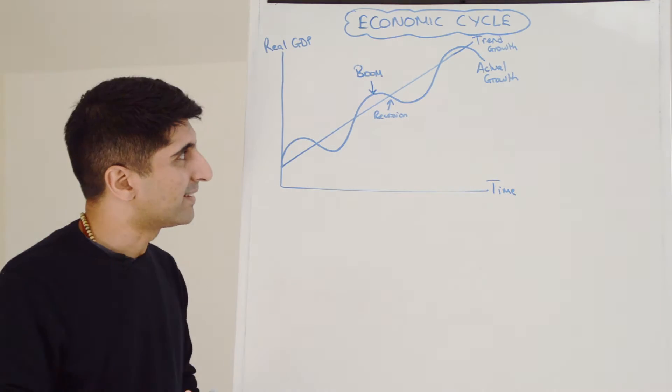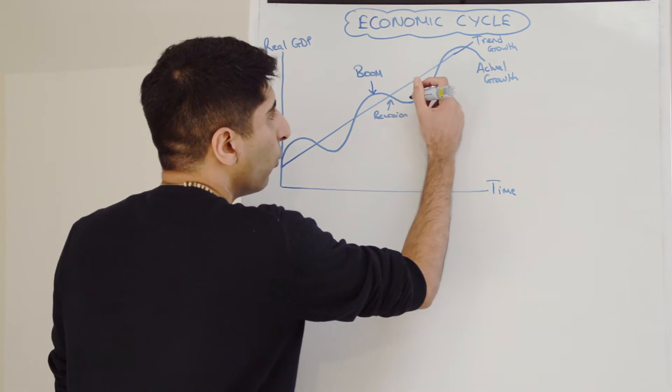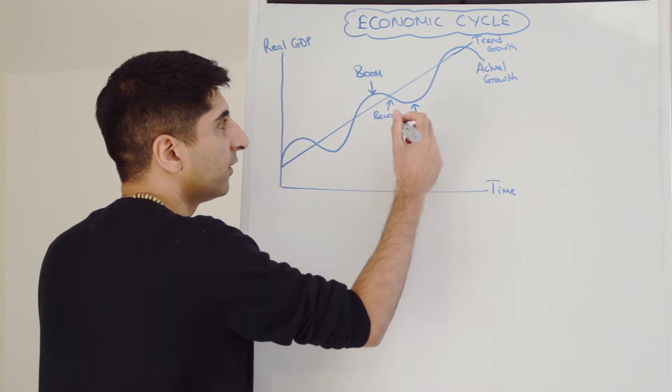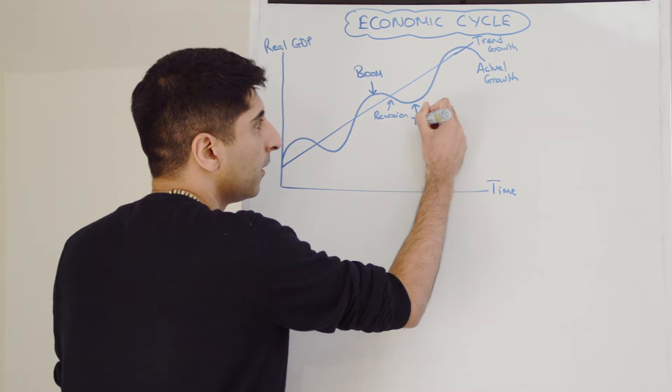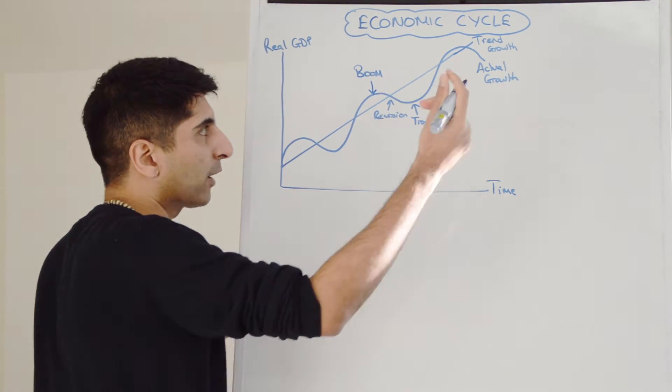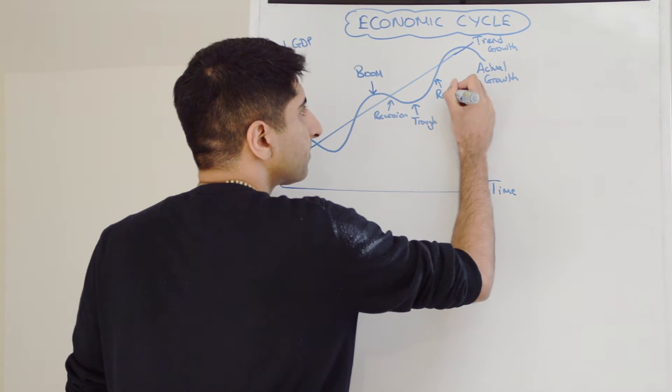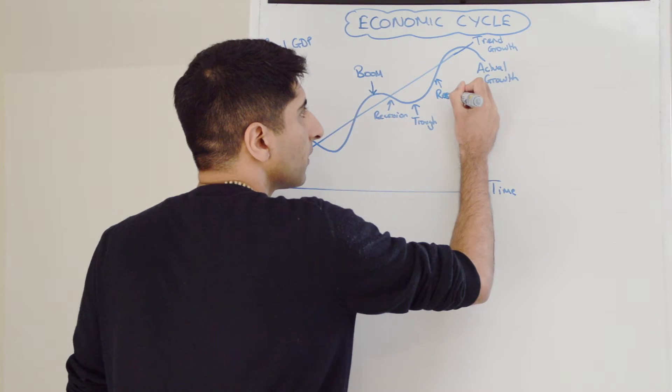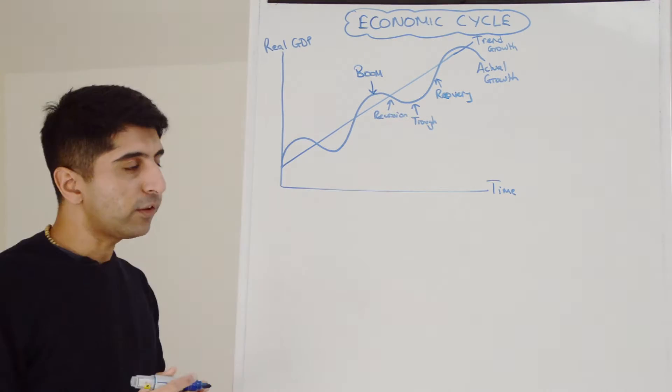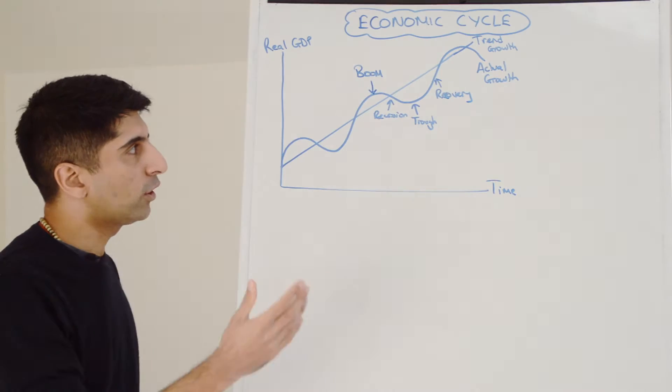So that's when growth is falling, is negative. When we hit the worst position from a recession, that's known as the trough. So the lowest points of the actual growth line is a trough. And then when things start to get better in the economy, that's a recovery, an economic recovery. So they are the four different stages of the economic cycle.